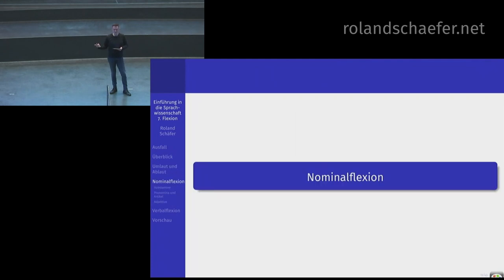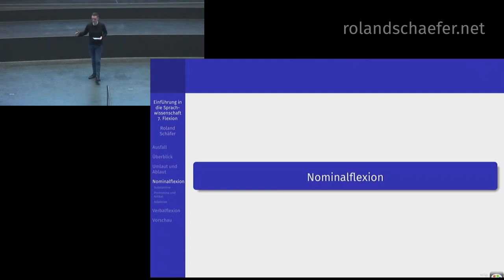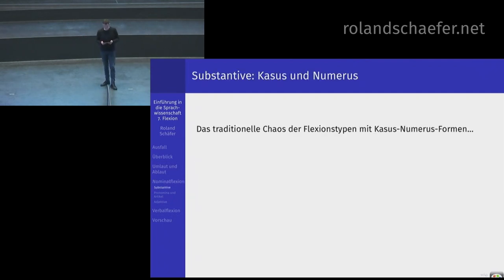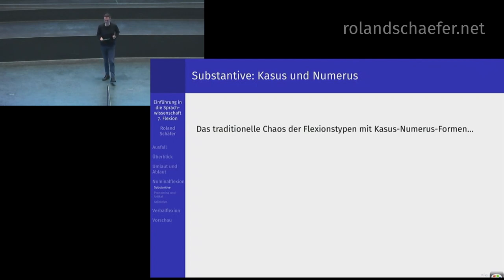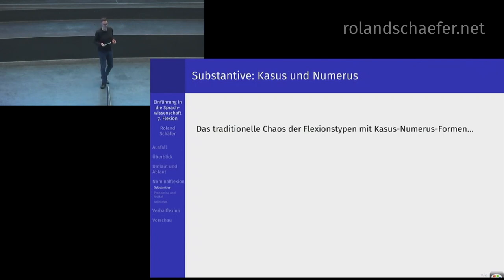Das ist ein wesentlicher Unterschied zwischen Umlaut und Ablaut. Dann haben wir Umlaut und Vokalstufen jetzt einmal aus dem Weg geräumt. Das ist zwar Phonologie, aber das brauchen wir jetzt an ganz verschiedenen Stellen in der Morphologie und in der Flexion im Speziellen. Ich fange jetzt an und gehe die Wortklassen durch, die flektieren. Ich werde sehr viel Zeit auf den nominalen Bereich verwenden – Substantive, Pronomina, Artikel und Adjektive.